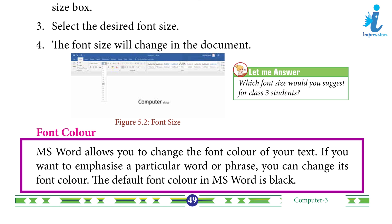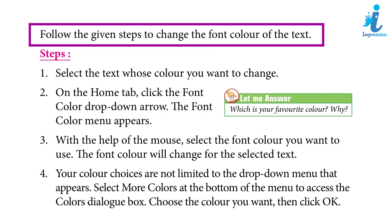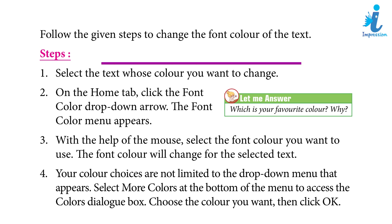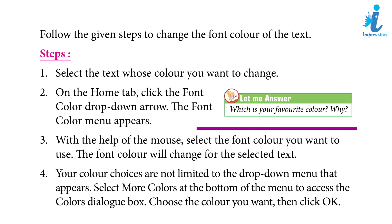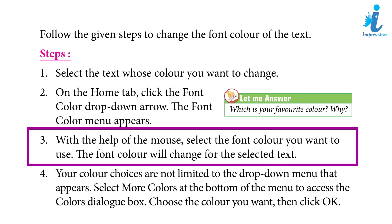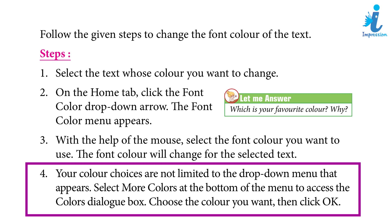Font Color: MS Word allows you to change the font color of your text. If you want to emphasize a particular word or phrase, you can change its font color. The default font color in MS Word is black. Steps: 1. Select the text whose color you want to change. 2. On the Home tab, click the font color drop-down arrow — the font color menu appears. 3. With the help of the mouse, select the font color you want to use. 4. Your color choices are not limited to the drop-down menu. Select 'More Colors' at the bottom of the menu to access the color dialog box, then click OK.